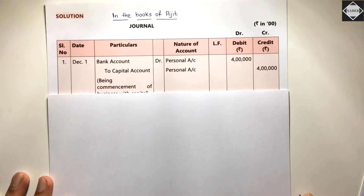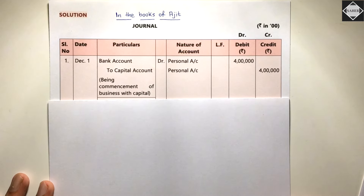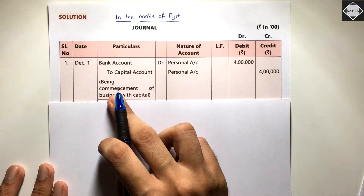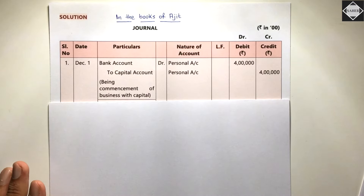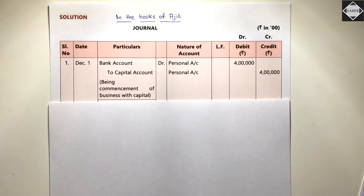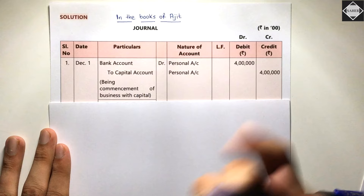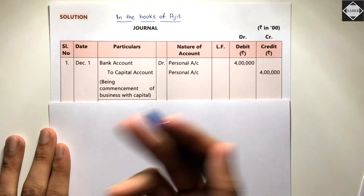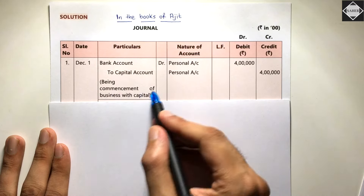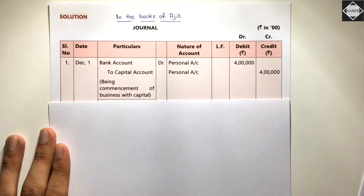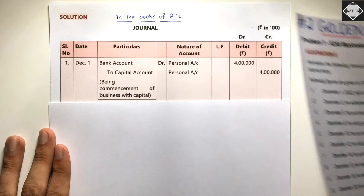After writing the journal entry, you must write the narration in brackets below the entry in your own words in simple English — whatever happened in the transaction. For example: 'Being business started with capital four lakh' or 'Being commencement of business with capital.' You don't need to memorize it.